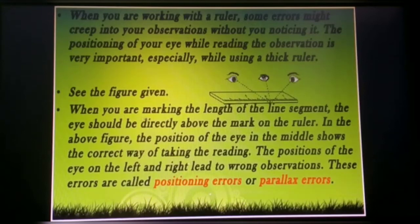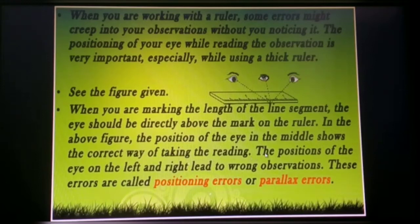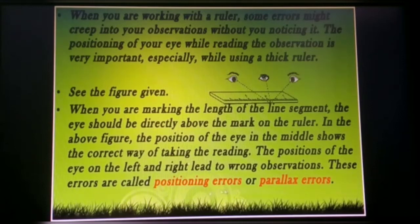See the figure given. When you are marking the length of the line segment, the eye should be directly above the mark on the ruler. In the figure, the position of the eye in the middle shows the correct way of taking a reading. The position of the eye on the left or right leads to wrong observation. This error is called a parallax error or position error.